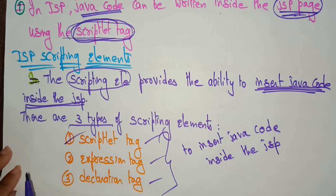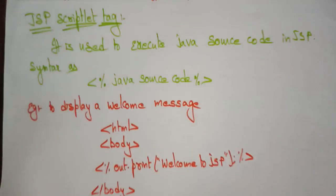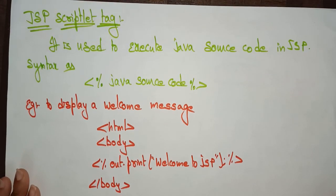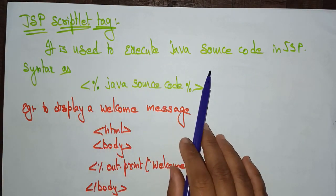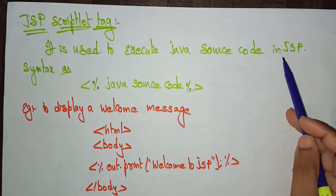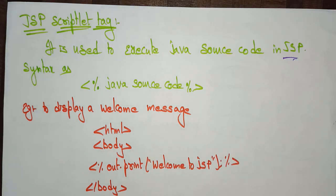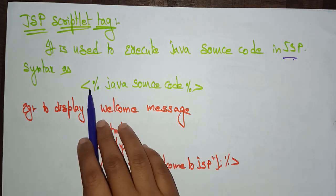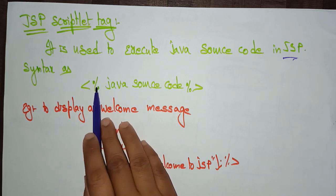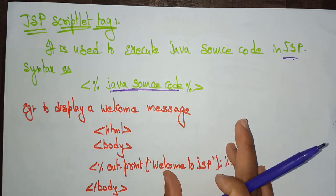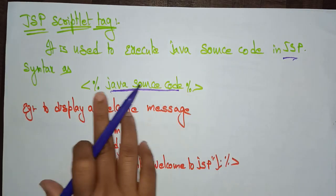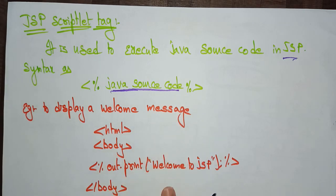Let's look at scriptlet tags first. The Java Server Page scriptlet tag is used to execute Java source code in JSP. The syntax uses a percent symbol — you write the Java source code inside the tag between the percent symbols. Whatever source code you want to execute, you write it inside these tags.